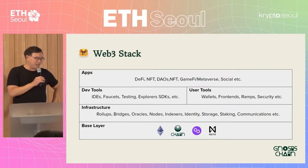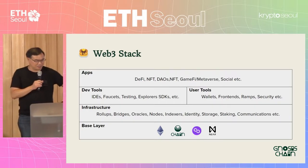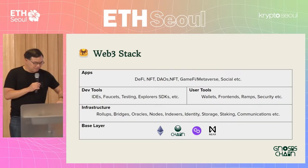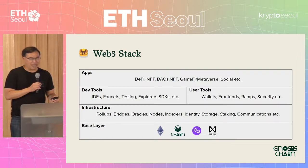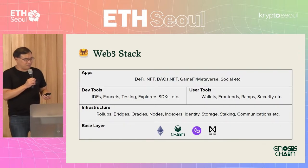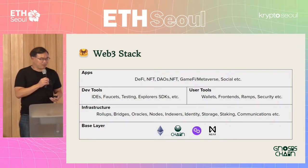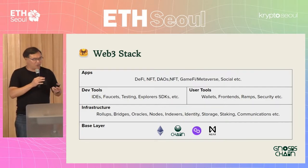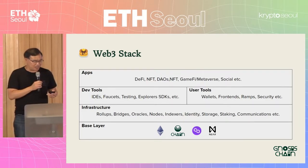Above that there are services that help developers build applications as well as help users use those applications. On the developer side you have tooling like IDEs, faucets, testing infrastructure, explorers, SDKs. On the user side you have wallets, front ends, protocols, on-ramps, fiat on-ramps and off-ramps, and security services. Above that is where most users interact with verticals like DeFi, NFTs, DAOs, GameFi, and social.